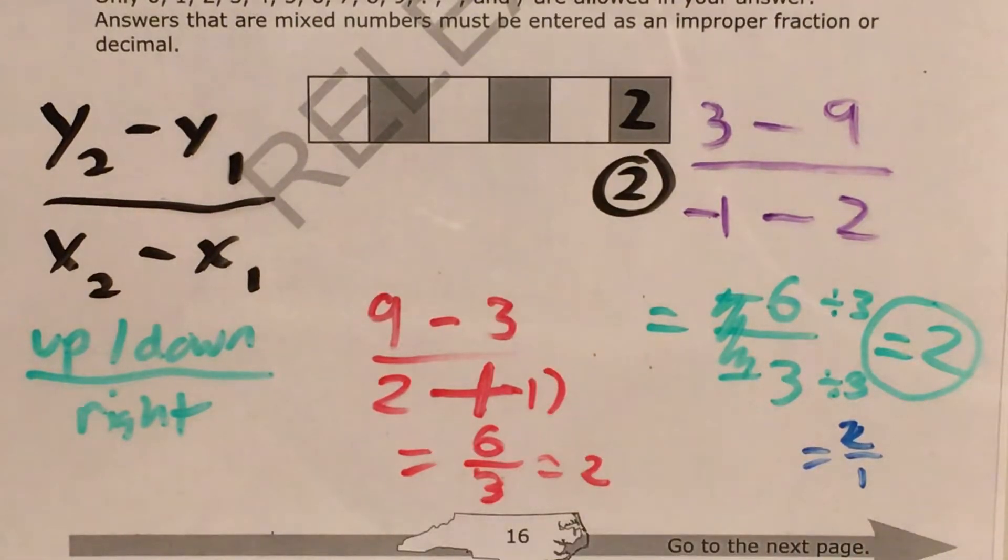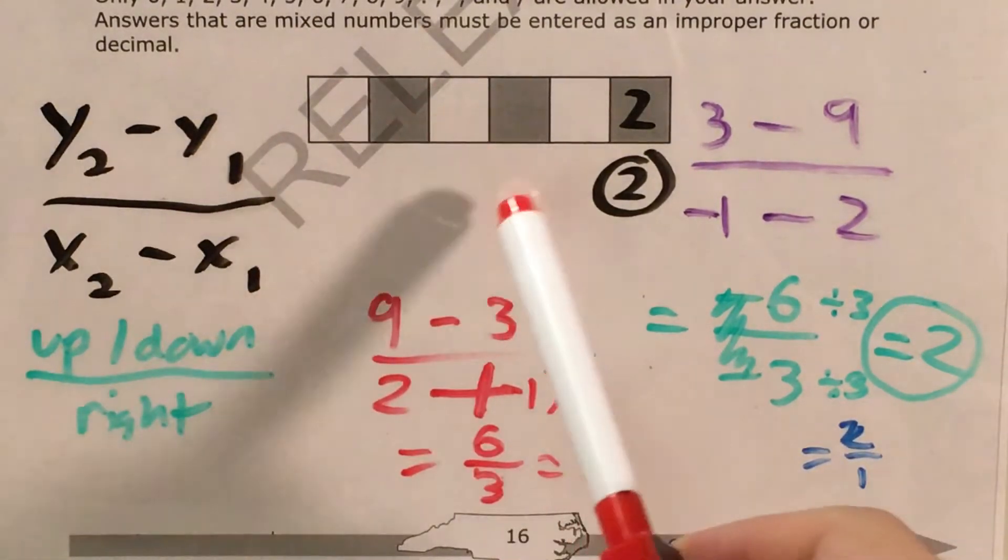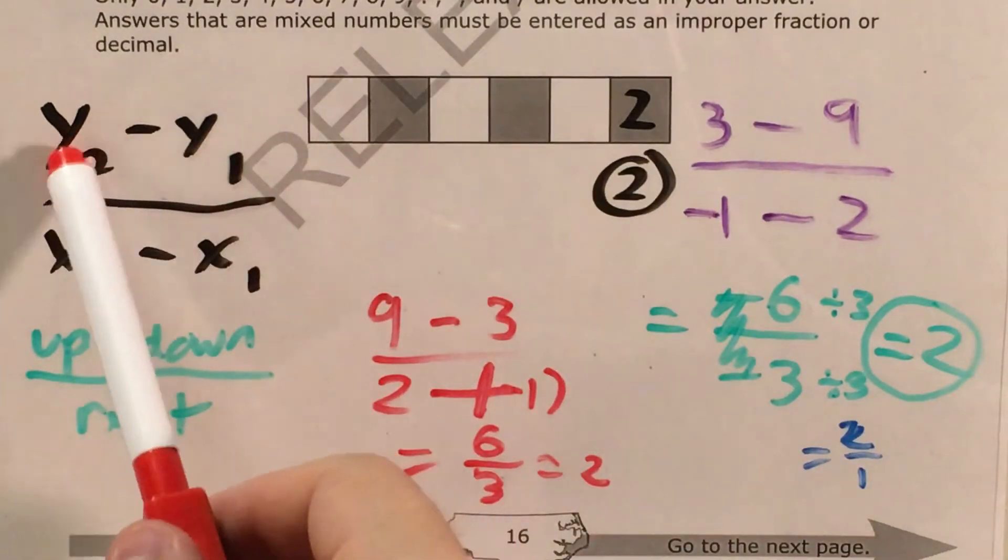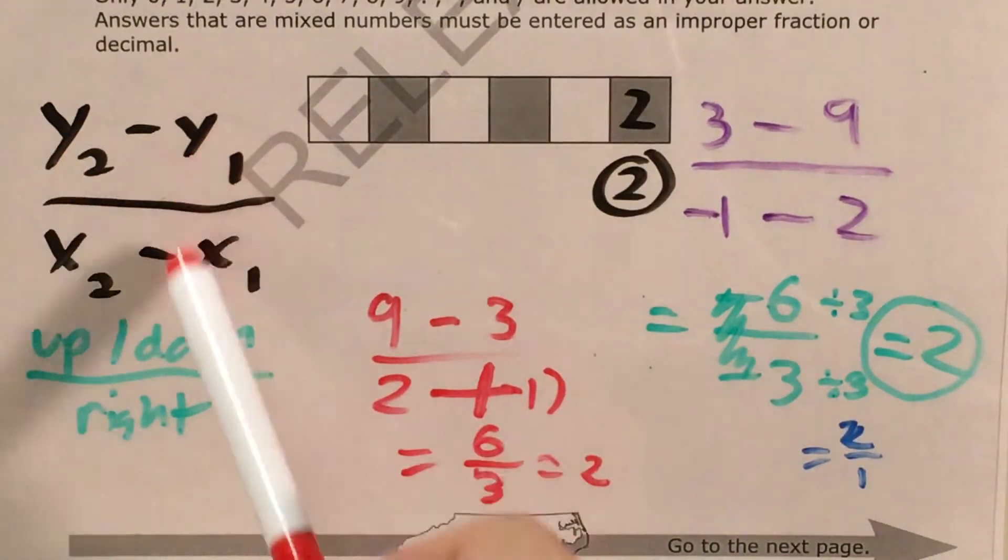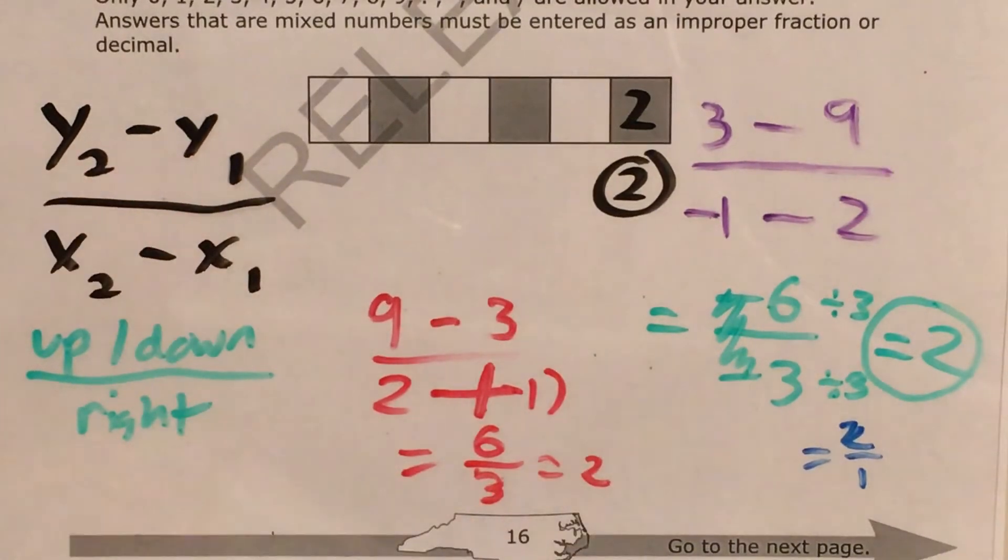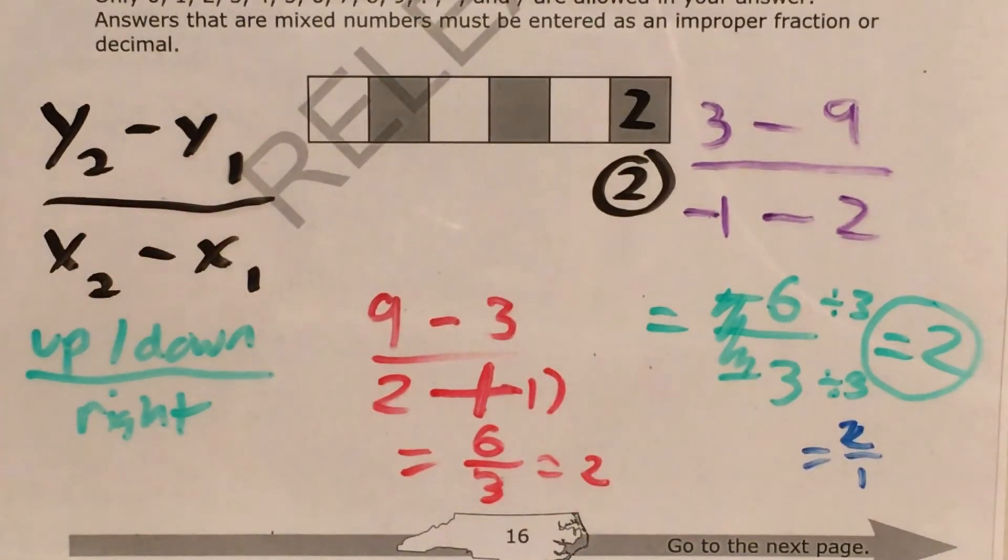And the only thing you need to keep track of though is to make sure that you're using the same point on the left and right in both of your subtraction expressions. Otherwise that's where you'll run into some problems.